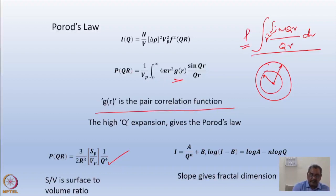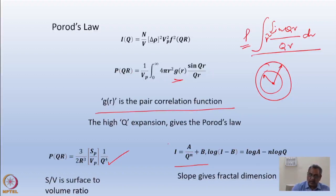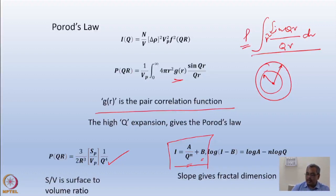Where S_p/V_p is the surface-to-volume ratio. If I look at a log plot — log of intensity minus the background — I get log of A minus n·log(q). So I is equal to background plus A/q^n, and this n actually gives you the dimension of the surface.